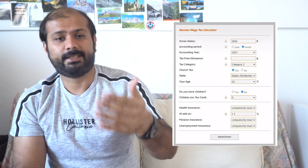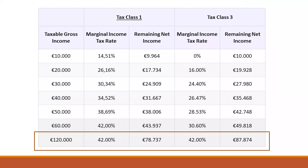If you are earning something between 9,744 euros and 57,919 euros, you pay a certain percentage of your gross income but not 42%. For example, if you earn 10,000 euros, you pay only 14.51% marginal income tax. If you earn 30,000 euros, you pay only 30.52% marginal income tax. At 60,000 euros gross income, you pay 42%. I will add a link to a German tax calculator in the description where you can enter your details to see how much tax you'll pay.